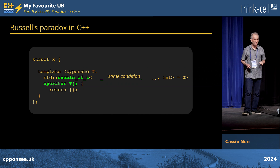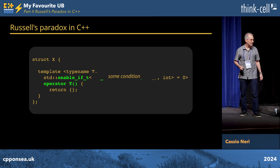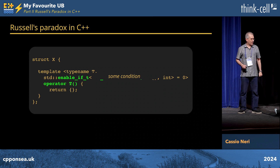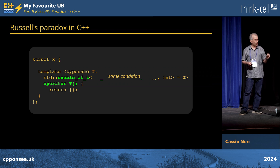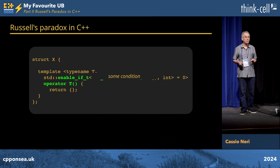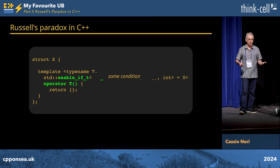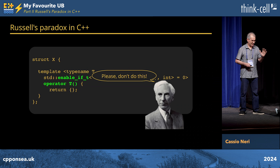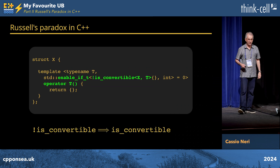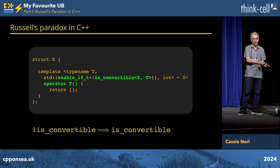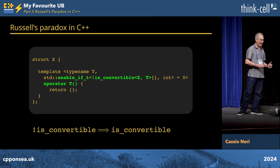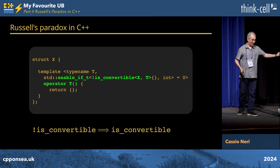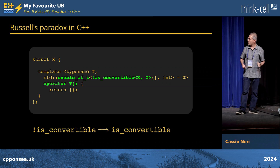So what is the connection between this and C++? Here is my struct X. I have a converting operator to T, but it's only there if some condition is true — and that condition is: if X is not convertible to T. So if X is not convertible to T, we add the operator, and then X is convertible to T. That's a paradox, very similar to what Russell came up with.